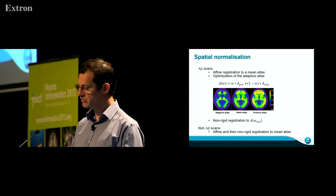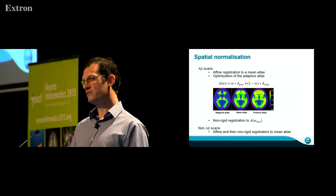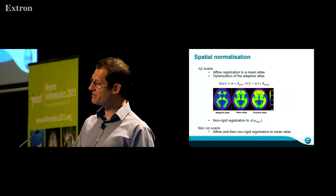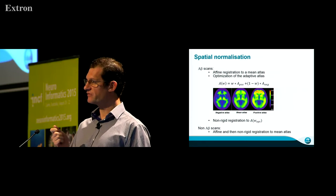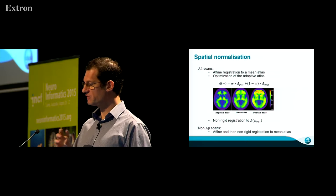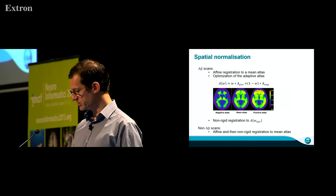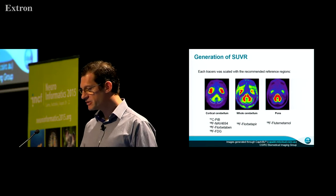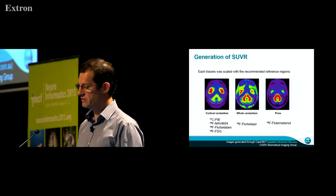The first challenge is that a PET scan looks very different depending on whether the subject is amyloid-negative or positive — unlike MRI. We created an atlas that varies from healthy to Alzheimer's. When a new subject scan is uploaded, we optimize parameters to select the atlas closest to that subject. Different tracers also require different normalization reference regions.